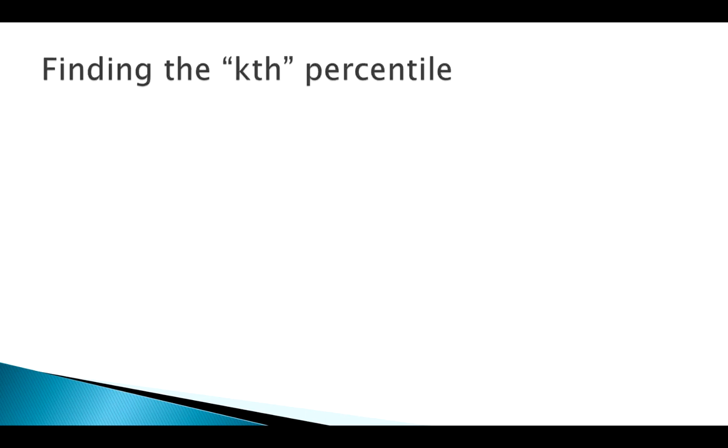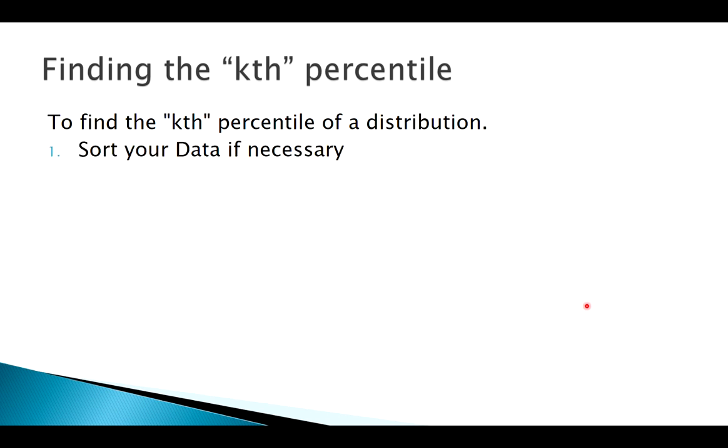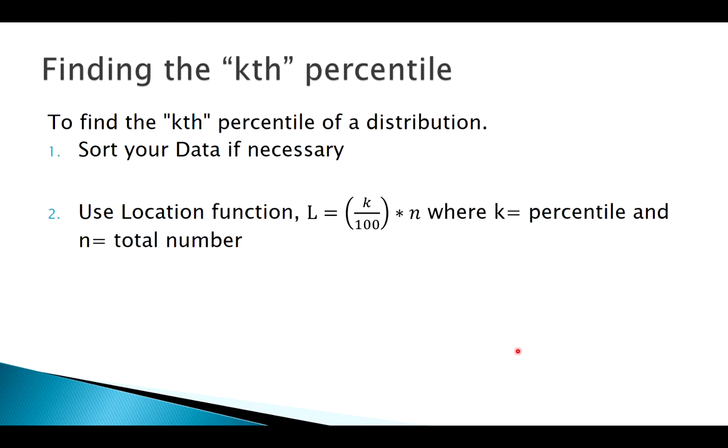On the other hand, sometimes we might want to know, well, where would I have to be to fall in a certain percentile, or call it the kth percentile. So there's a few, depending on the resource you're using, there's a few different kind of algorithms out there to do this, right, but here's one that I think is pretty straightforward. So obviously we need to sort our data first, and then use what we would call a location function.